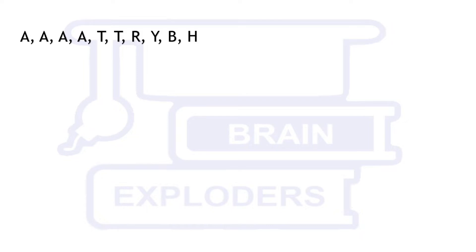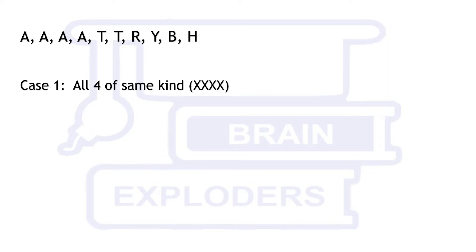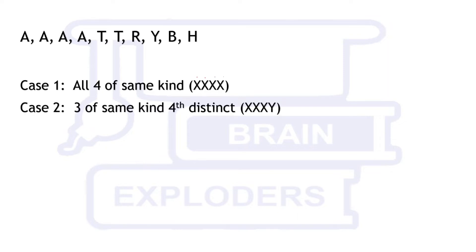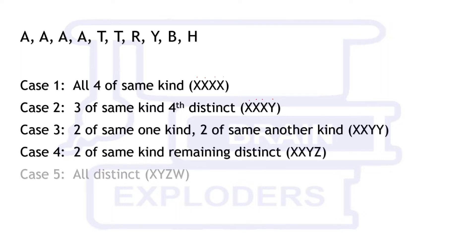So we divide the problem into different cases based on how many of the same letters and how many distinct letters we select. The total problem is divided into five cases. Case 1: all four letters are the same (x x x x). Case 2: three of the same type and one distinct (x x x y). In how many ways can we select four letters such that all are the same? Obviously only by selecting all four A's.